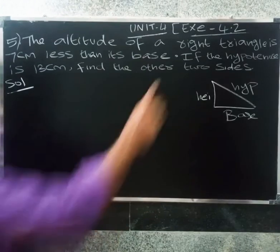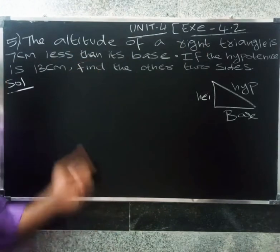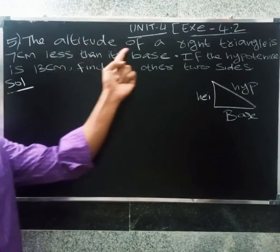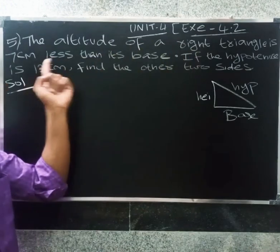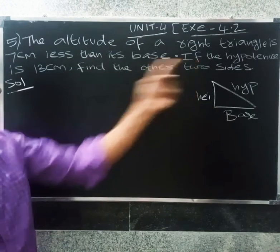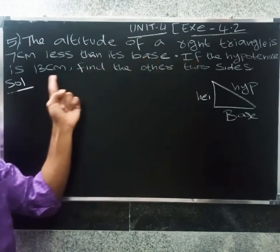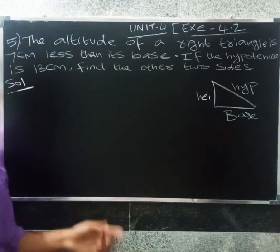Welcome friends. The altitude of a right triangle is 7 cm less than the base. The hypotenuse is 13 cm. Find the other two sides.